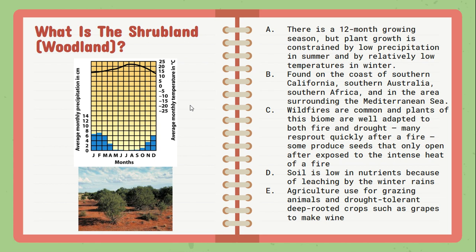Looking at the shrubland or woodland — the climatograph shows very little precipitation during some months and a little more during others, with little temperature variation. There is a 12-month growing season, but plant growth is constrained by low precipitation. This biome is usually found on the southern coast of California or Australia, and wildfires are very common here, as plants can be adapted to that factor. Due to the low precipitation, soil nutrients can be low. Agricultural uses include grazing animals and drought-tolerant crops such as grapes.